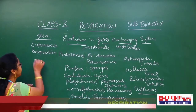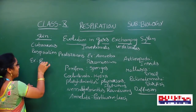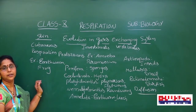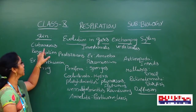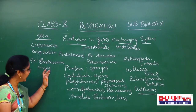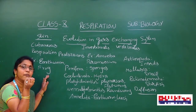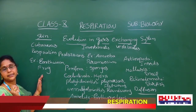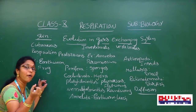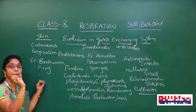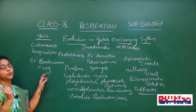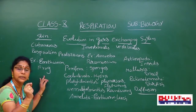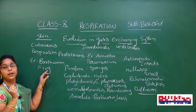In frogs, the skin is made up of a moist nature because mucus glands are present. In these mucus glands, blood capillaries are present. Through these capillaries, blood is diffused into the skin. So frogs and earthworms respire through their skin. One third of the volume of respiration in frogs is taken through the skin.